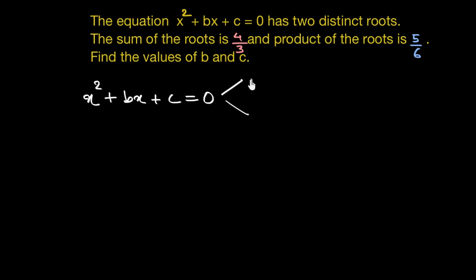Let's name the roots as p and g. Sum of the roots, that is p plus g, is equal to four by three. And product of these roots, that is p times g, is equal to five by six. Find the values of b and c.